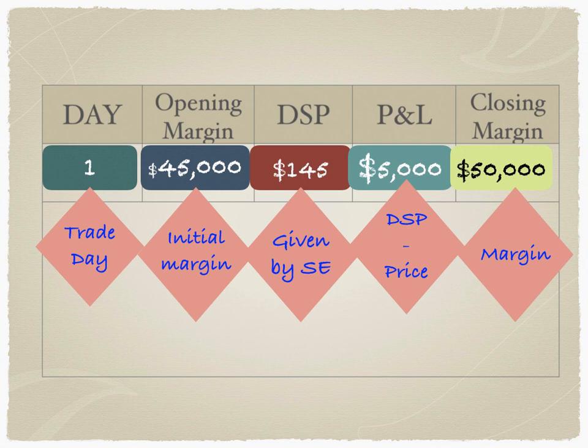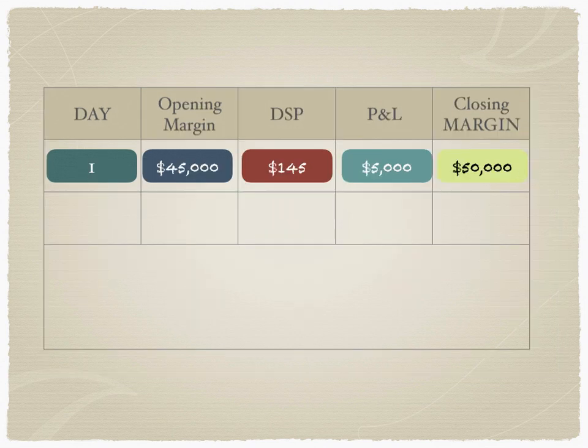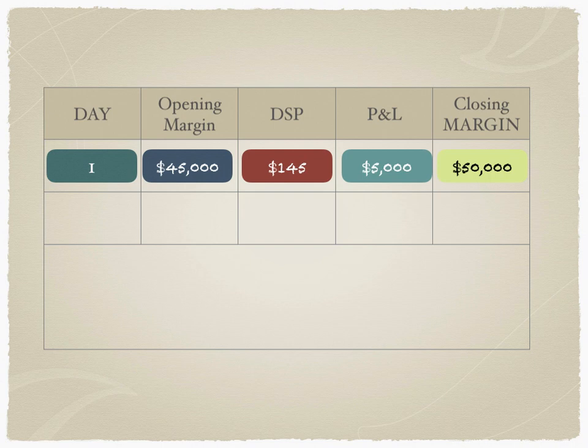The DSP is not something any broker can determine at their own discretion — it must be done at the price announced by the stock exchange. The margin account is like a flow account: money comes in, money goes out, and MTM is calculated almost every day. Let's understand this flow concept very well.